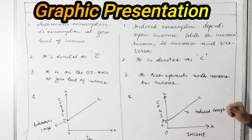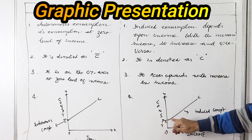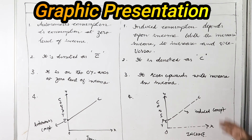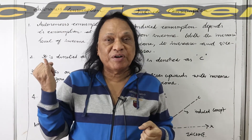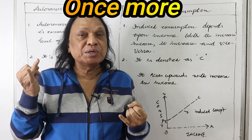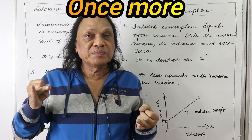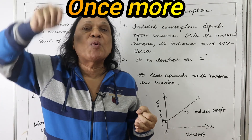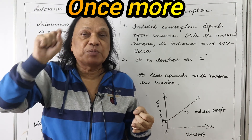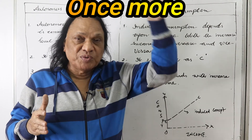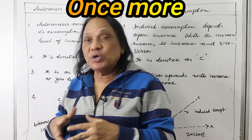The induced consumption curve rises upwards with increase in income. You can see here — this is C bar, autonomous consumption, and this is C, induced consumption. As income increases, this consumption also increases; as income comes down, consumption also comes down. To revise: autonomous consumption is the consumption at zero level of income; induced consumption changes with changes in national income. Autonomous consumption is denoted as C bar, which is constant on the OY axis. The induced consumption curve keeps on rising upwards.